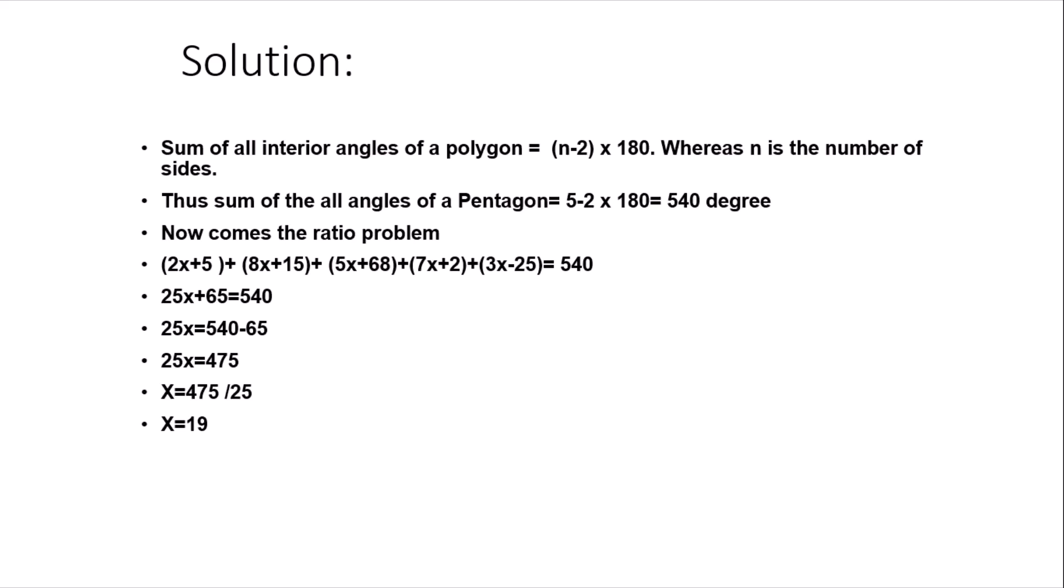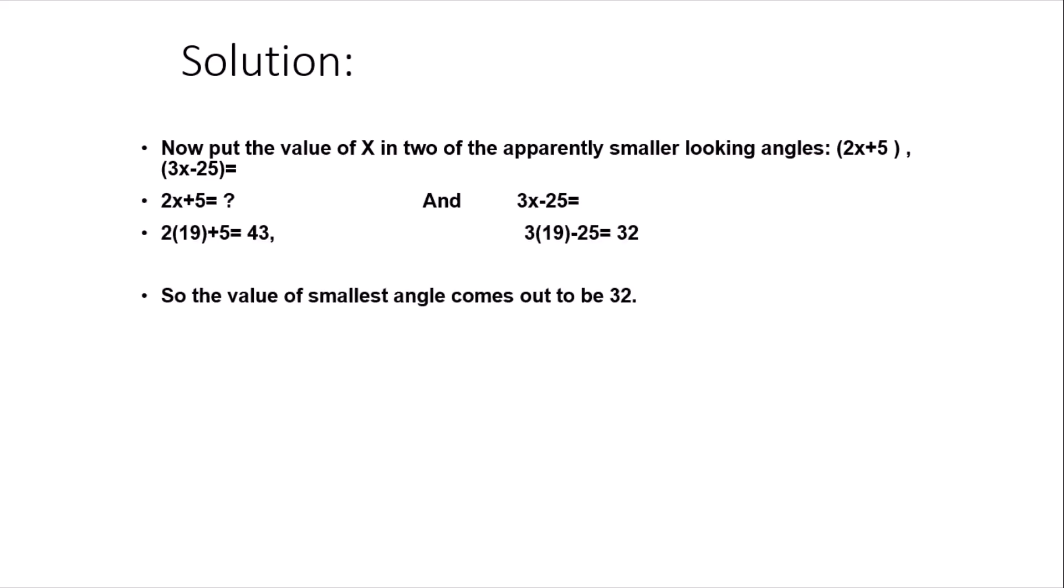We can put the value of x in these two angles and come to know which is the smallest. Here I have solved for the value of x in these angles. You can see that 2x+5, although the factor x is multiplied by 2, the value of the angle is 43. In the second apparently smaller looking angle, where the value of x is 3 but it is being subtracted from 25, the value of angle is 32. So we come to know that the value of smallest angle is 32. We will look for the options in the answer and select that.